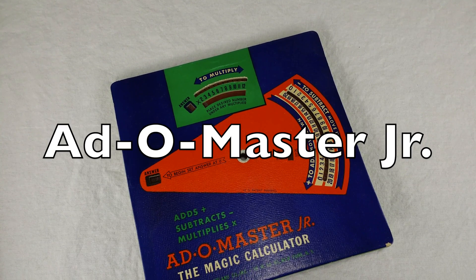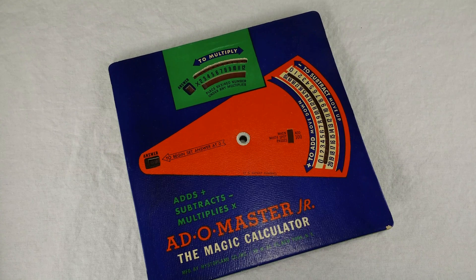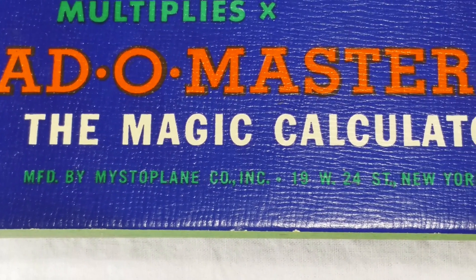This is the Add-O-Master Jr., The Magic Calculator, made by the Mistoplane Company in 1941.